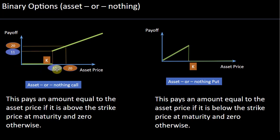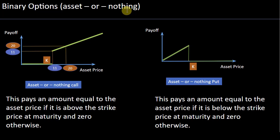The x-axis is the asset price and the y-axis is the payoff. At maturity, if your asset price is $11 — exceeding the strike of $10 — you receive a payoff of $11. If your asset price is $20, you receive a payoff of $20. But if your asset price falls below the strike, there's nothing. This differs from a normal call option where the payoff would be $11 minus $10, i.e., $1.